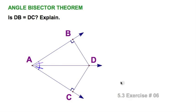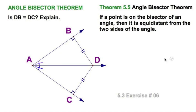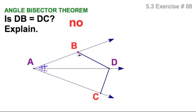Let's apply our theorems. Number six: is DB equal to DC? We can only go by our tick marks. We've got AD as an angle bisector, and I've got right angles at B and C. That tells me the answer is simply yes — angle bisector theorem, these two are congruent. Now, for the next question, are these two congruent? The answer is no, because there's no indication that it's the perpendicular distance. You can't just draw any random segment.